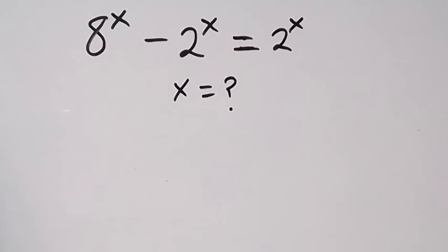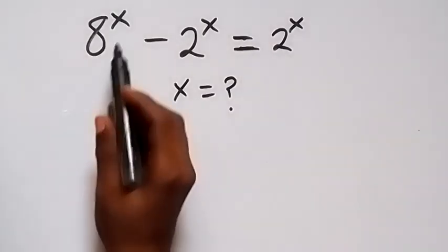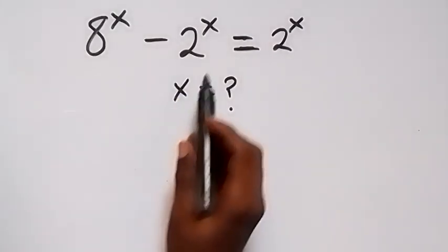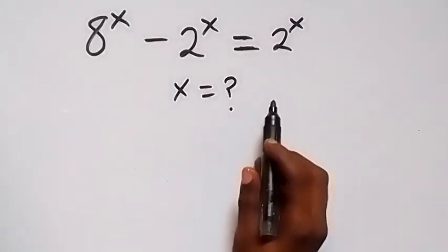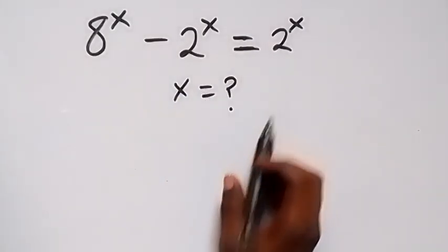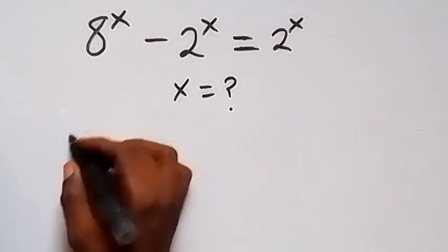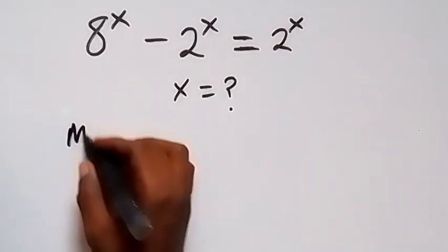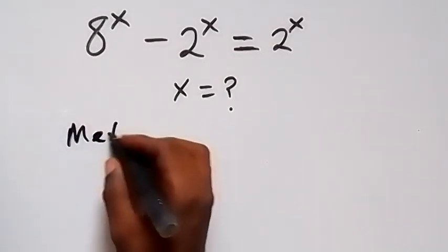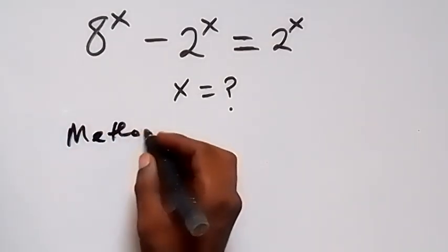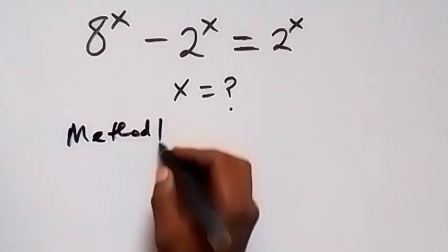Hello, you are welcome. How to solve this nice algebra problem: 8 raised to power x minus 2 raised to power x equals 2 raised to power x. Let's look at method one.